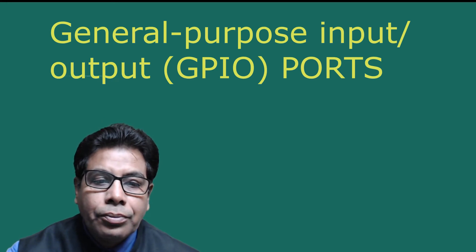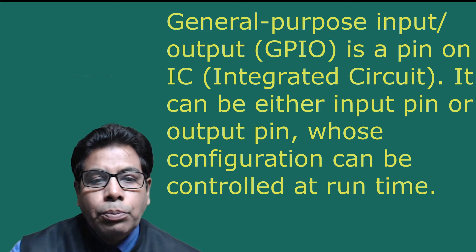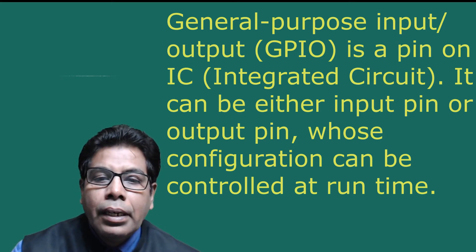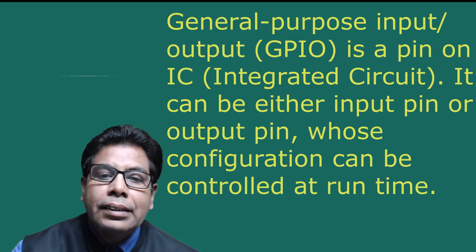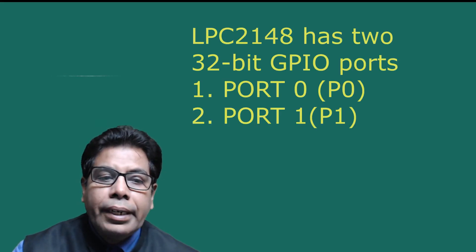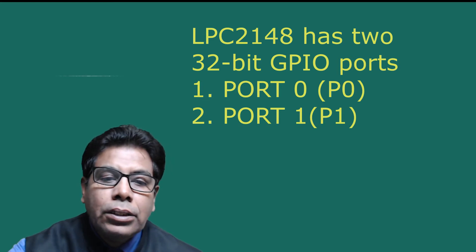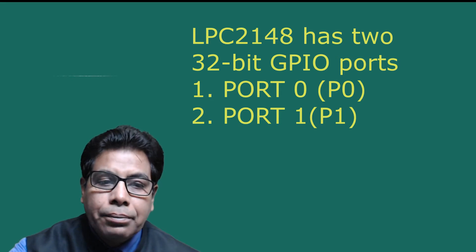Now let us see the general purpose input output ports — GPIO. A GPIO is a pin on an integrated circuit; it can be either an input pin or output pin whose configuration can be controlled at runtime. A group of these pins is called a port. LPC 2148 has two 32-bit GPIO ports: port 0 (P0) and port 1 (P1).